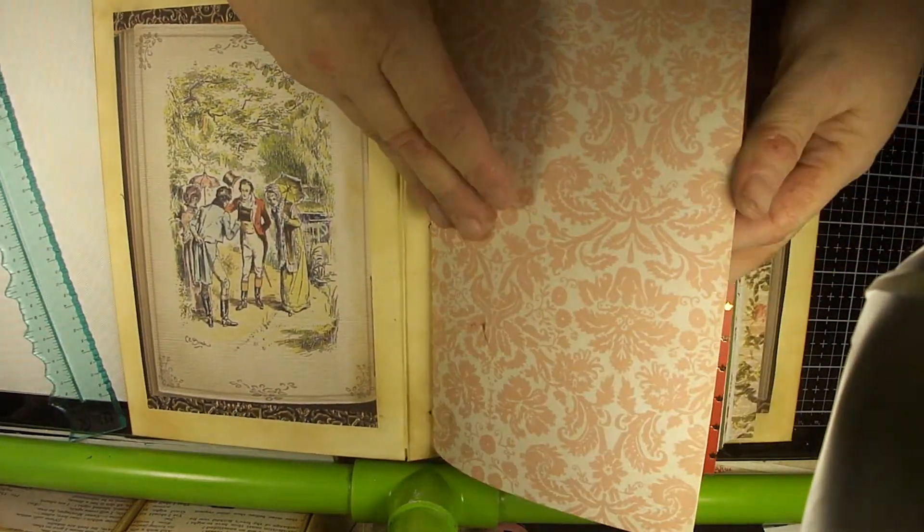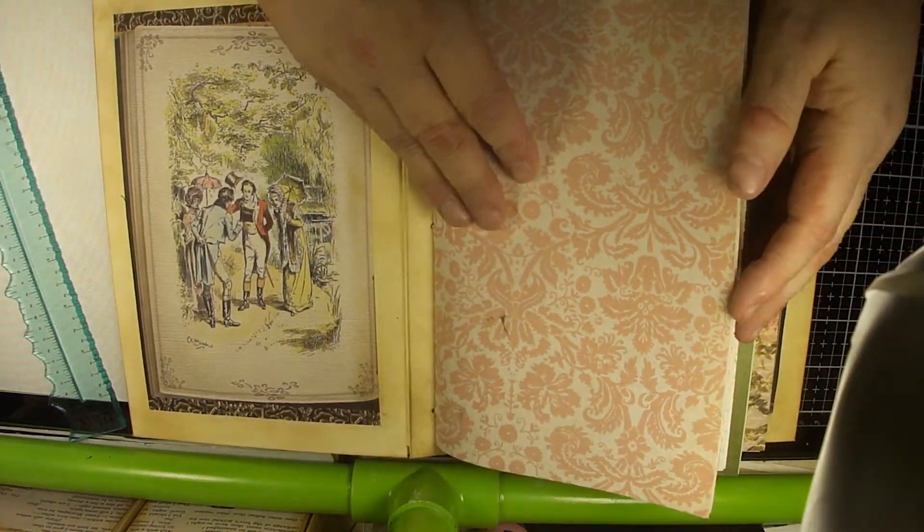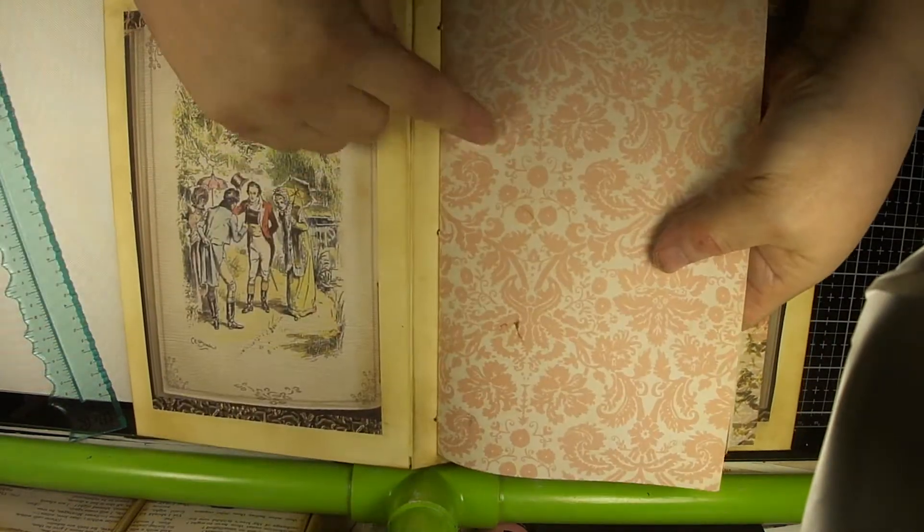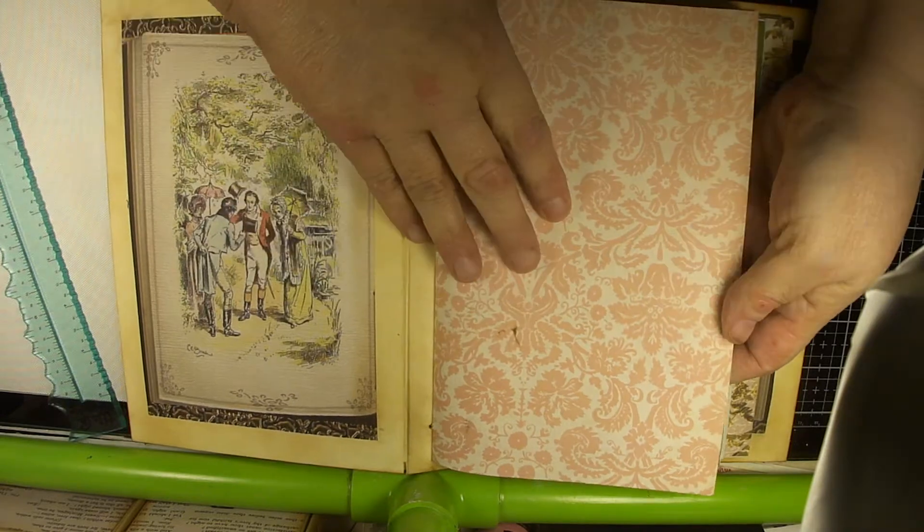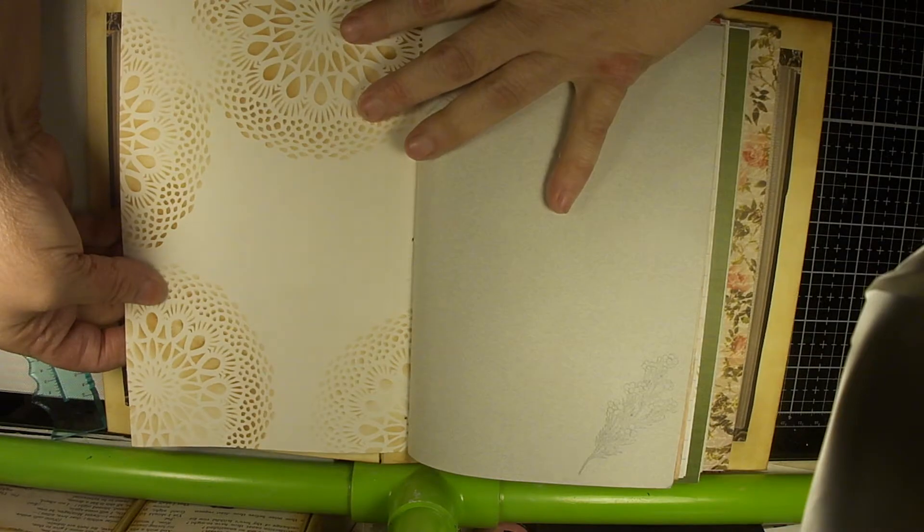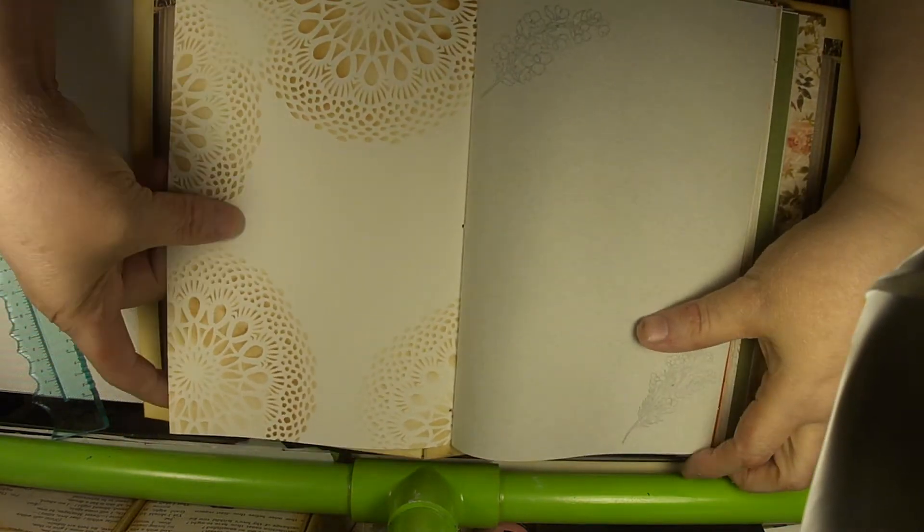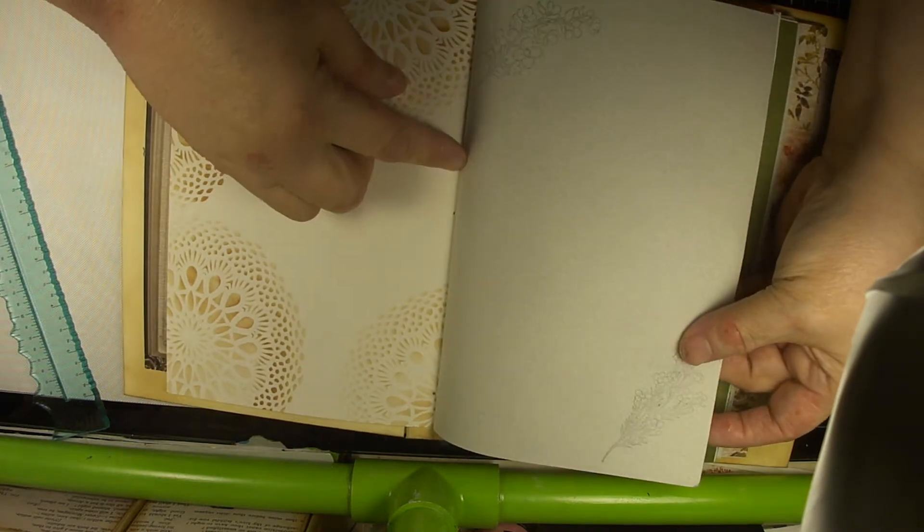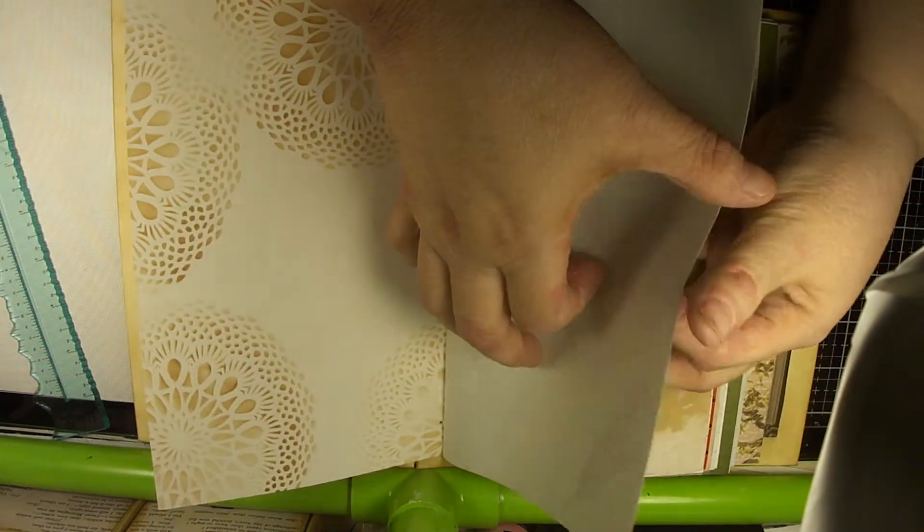But I wanted to show you, I did stencil some pages, and I did some stamping. So, on all of these pages, the card stock from DCWV, the back of the pages was white. So, I stenciled on all of those. And I also did some stamping on some various pages.